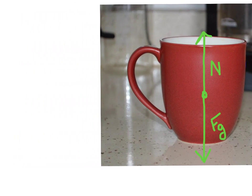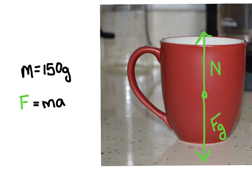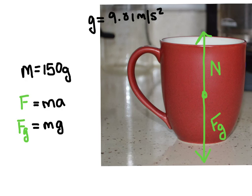If this coffee cup had a mass of 150 grams, then we could calculate the force of gravity by using the equation F equals MA. The acceleration due to gravity is a constant. We actually use the symbol G and it's going to be 9.81 meters per second squared. So let's go ahead and solve for the force of gravity. I can rearrange this equation to use that symbol just replacing the A with the G, and let's plug in what we know.